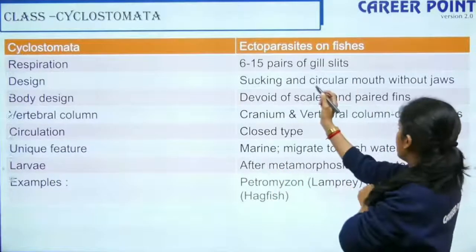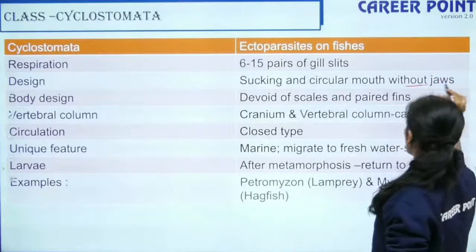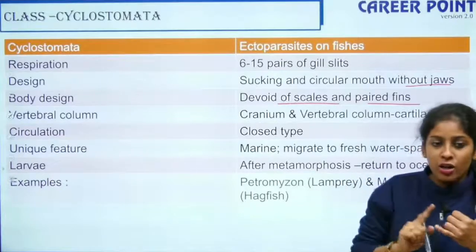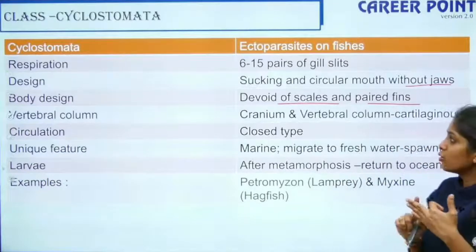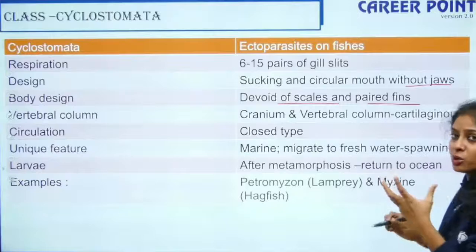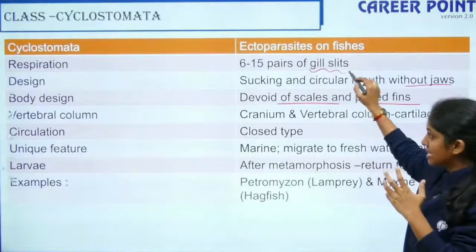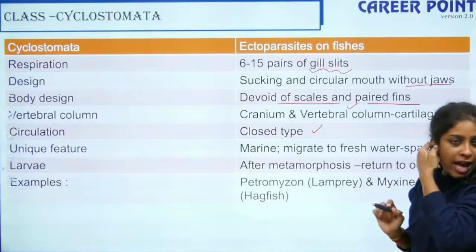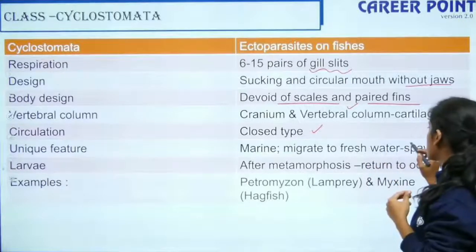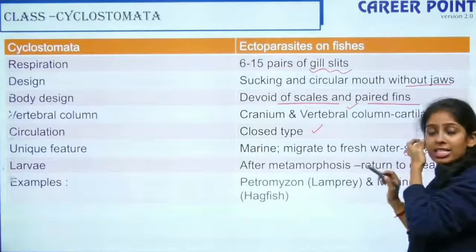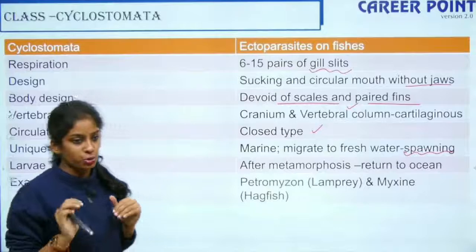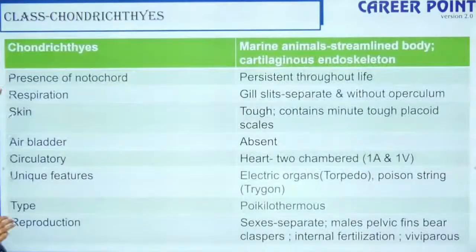Under Vertebrata, those with no jaws belong to Class Cyclostomata. They have no jaws, no scales, and no fins — three things absent. But they do have gill slits and a vertebral column. Their circulatory system is closed, and they show spawning — migration from marine water to fresh water.